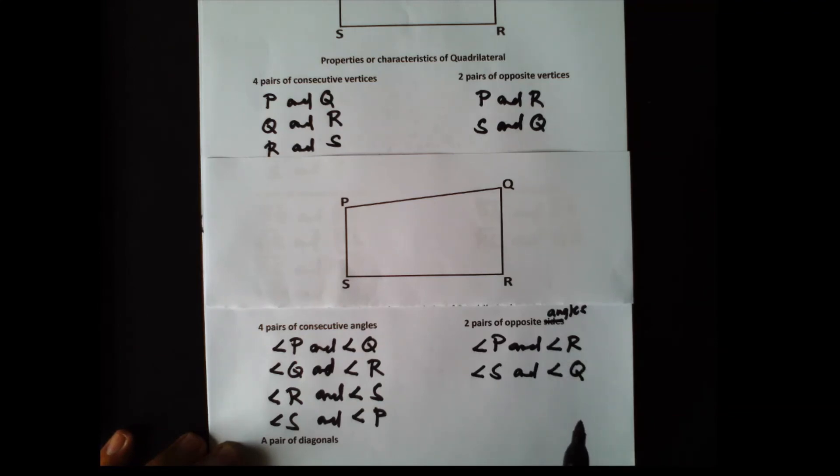Now for the 2 pairs of opposite angles. The first pair: angle P is opposite to angle R. The second pair: angle S is opposite to angle Q. Those are the two pairs of opposite angles of quadrilateral PQRS.